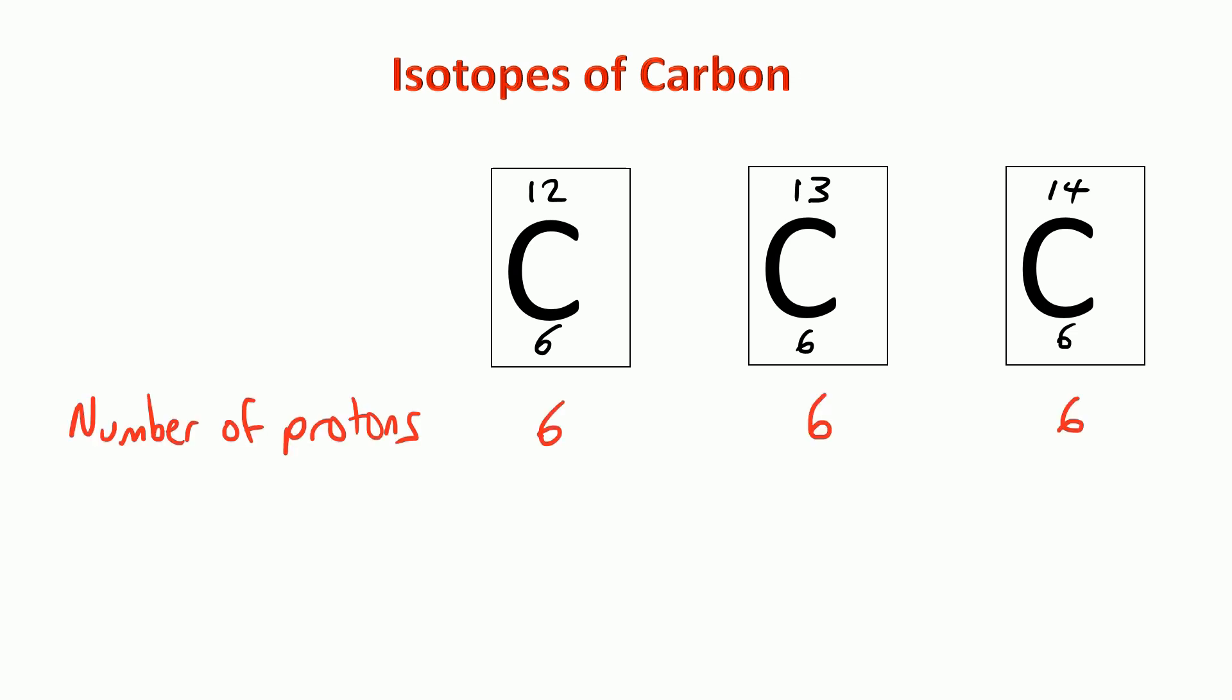First of all, we can see from the atomic number that each of these types of carbon have six protons. If you can't remember how to work out the number of protons, electrons, and neutrons, I'll put a link up here to one of my previous videos as a reminder.